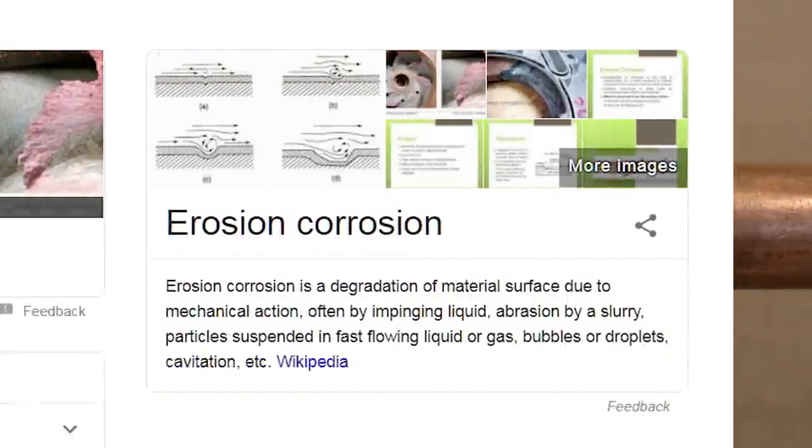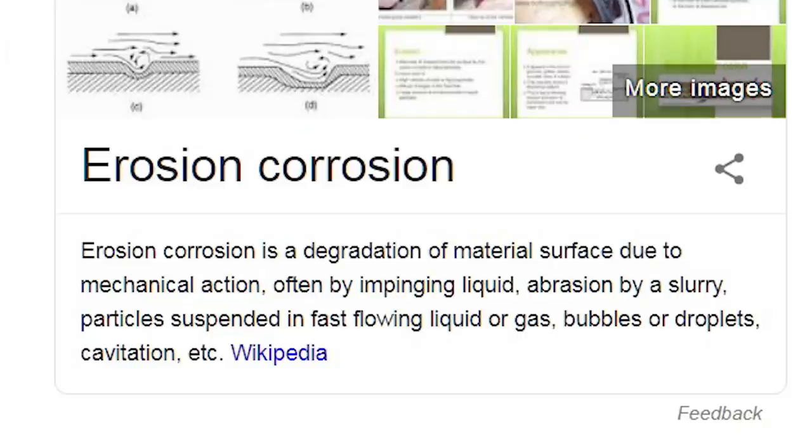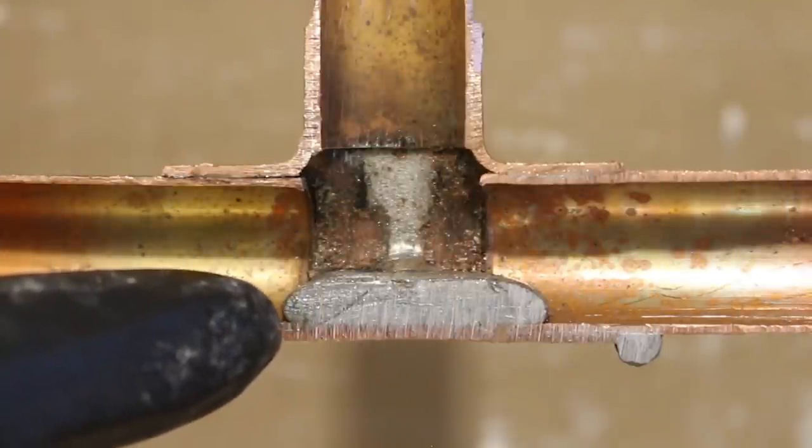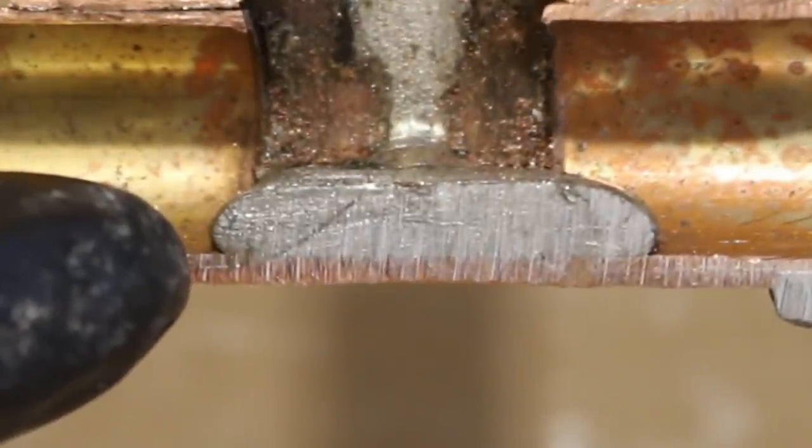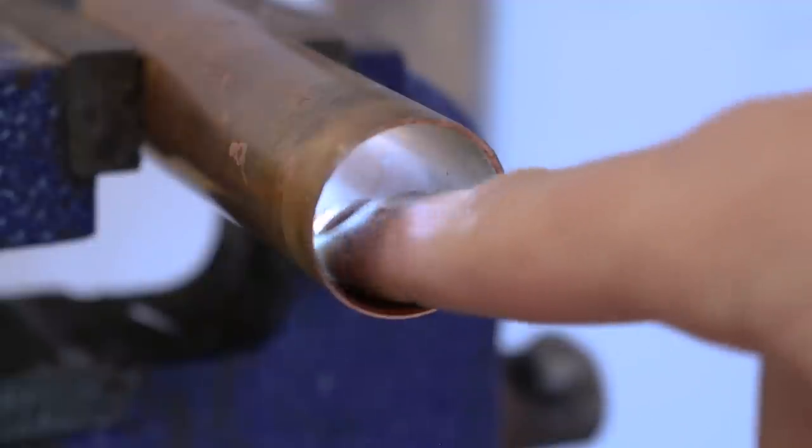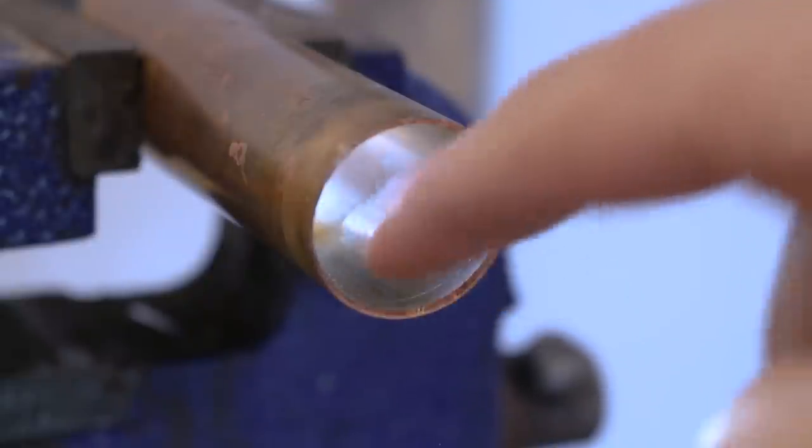It might seem drastic, but according to the CDA or Copper Development Association, this is the most common mistake to make which causes pinholes. Something else that causes turbulence is if you apply too much solder. It accumulates inside the fitting and creates a similar problem. So to avoid this phenomenon, it's important that the inside of the pipe remains at its full bore.